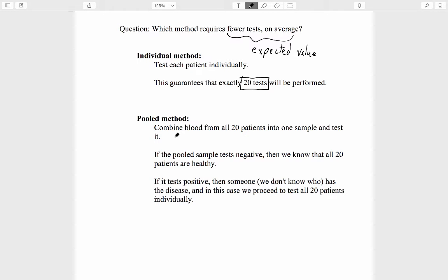For the pooled method, we need to do more of a computation. We need to think, what are the different possible numbers of tests we might need to perform? If the pooled sample test is negative, then we are all finished after one test, we send all the patients home, fantastic. There's no more that needs to be done.